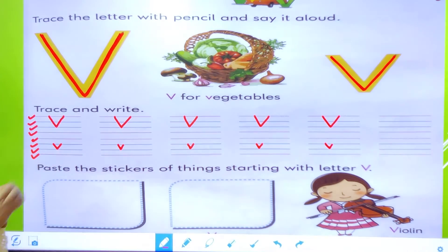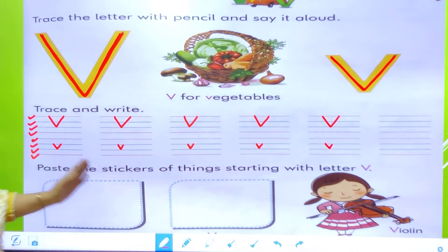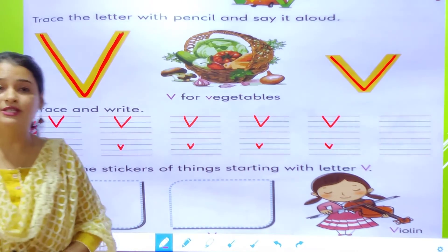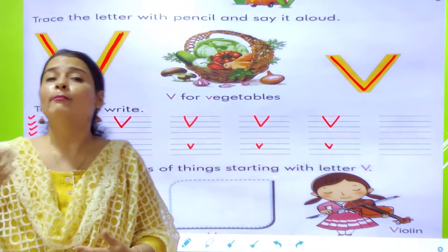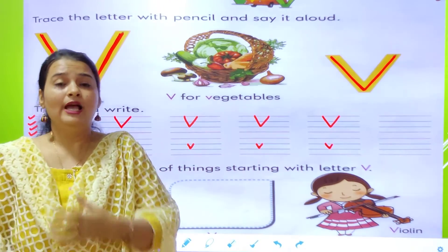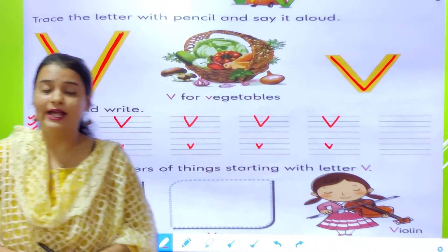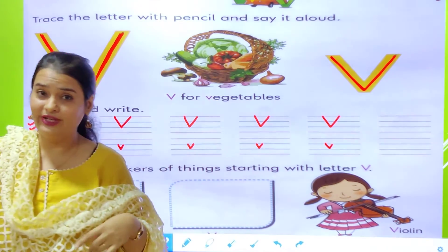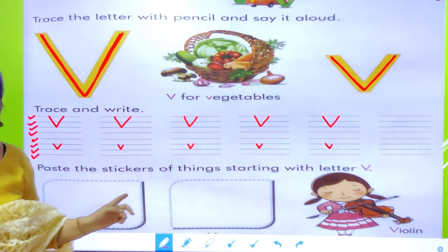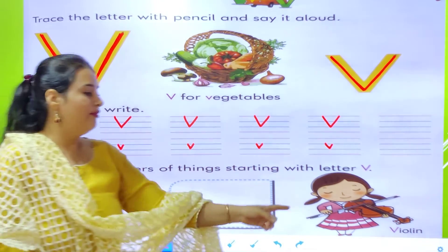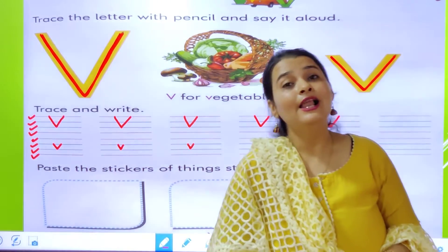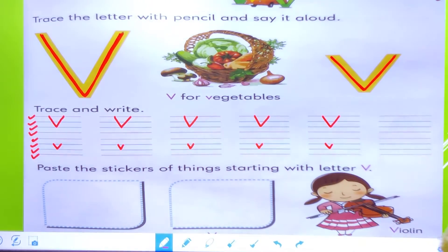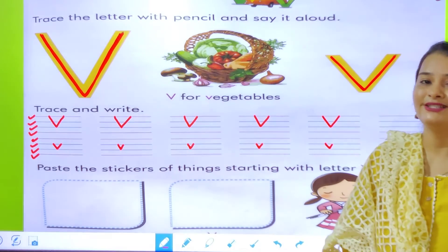Now what we have to do here — paste the stickers of things starting with letter V. You all have stickers at the back of your book. So you have to find the stickers of objects that start from letter V and paste them here. So V for violin — violin is one of the musical instruments, and violin also starts from letter V.